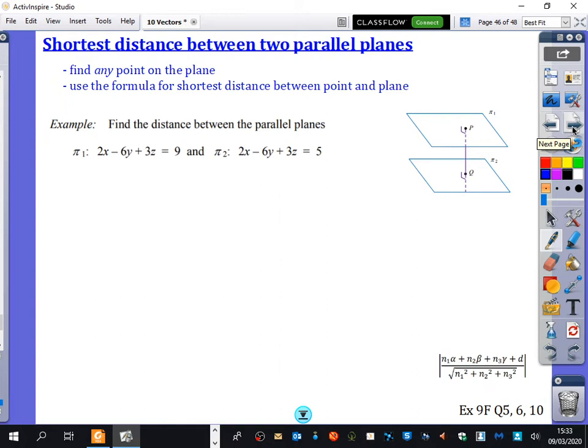So first of all, all you do is you find any point on the plane. I don't care which plane, but I usually would think about doing the one on top. So we're going to try and find the shortest distance between these two planes, which are 2x minus 6y plus 3z equals 9, and 2x minus 6y plus 3z equals 5. First of all, how do I know that these planes are parallel? They're multiples of each other, aren't they? But they have a different D value. If they had the same D value, then they would just be the same plane. So this, again, links back into our idea of matrices and things. So these are going to be an inconsistent system, aren't they? They're definitely going to be inconsistent.